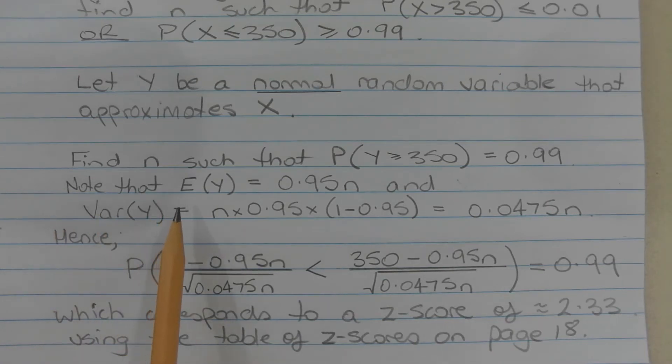Note that the expected value of Y is equal to 0.95N and the variance of Y is N times 0.95 times 1 minus 0.95, which equals 0.0475N.